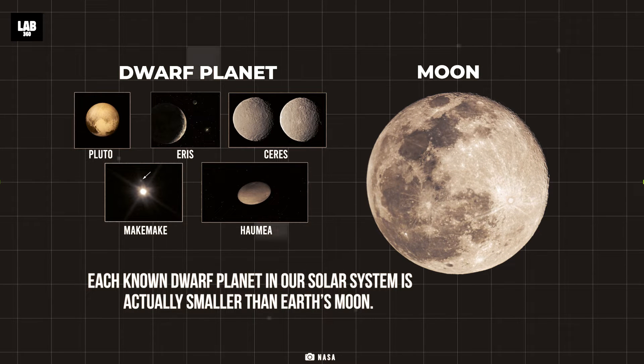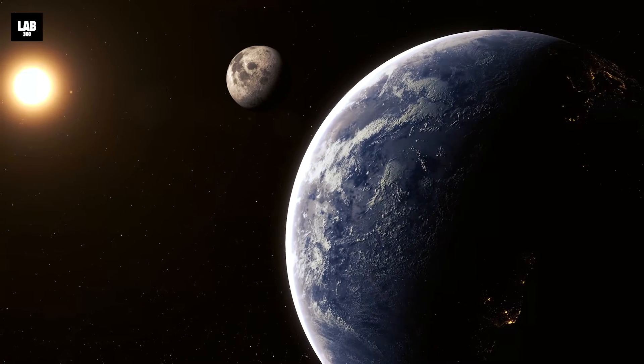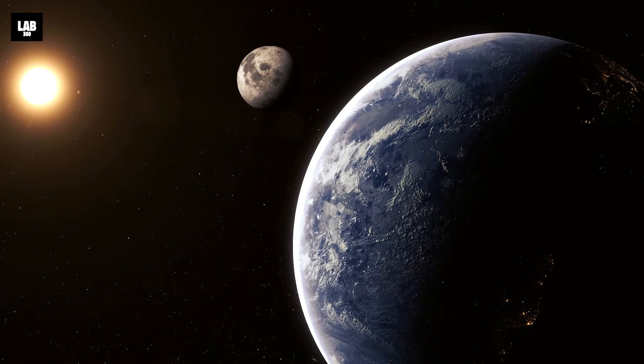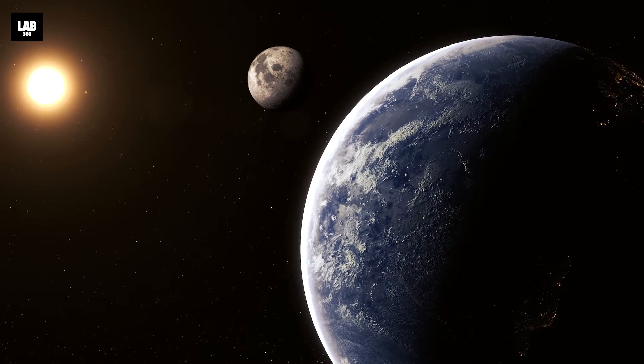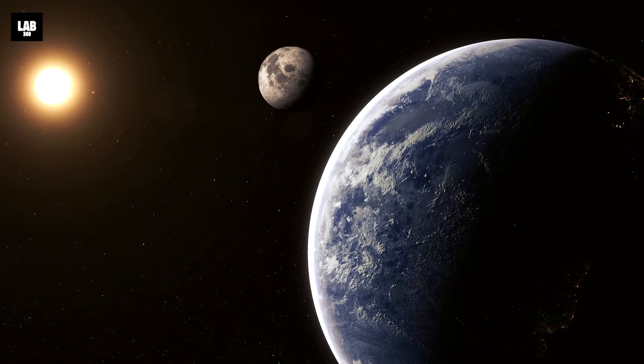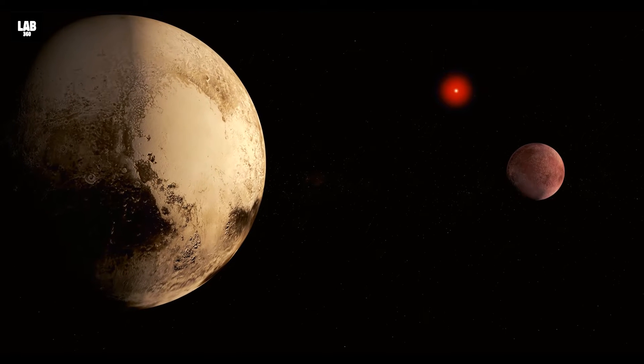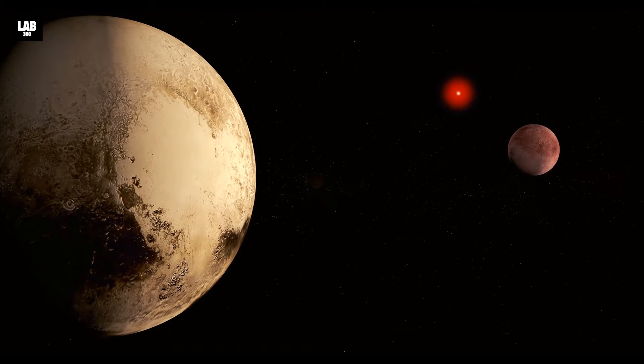Fun fact: each known dwarf planet in our solar system is actually smaller than Earth's moon. Our moon is less than a third of the width of Earth with a radius of about 1,080 miles. So in the current scenario, there may exist hundreds and thousands of dwarf planets in the solar system.